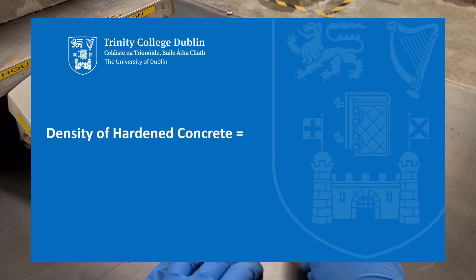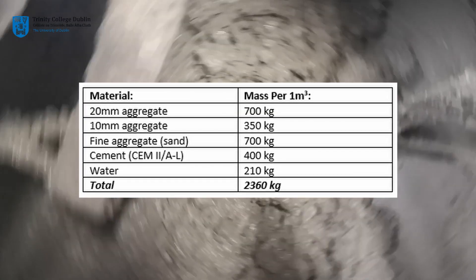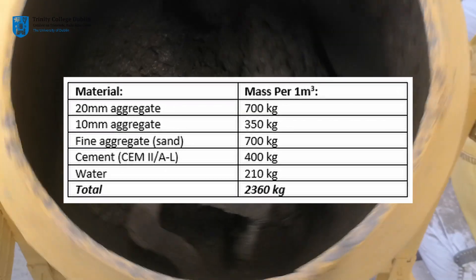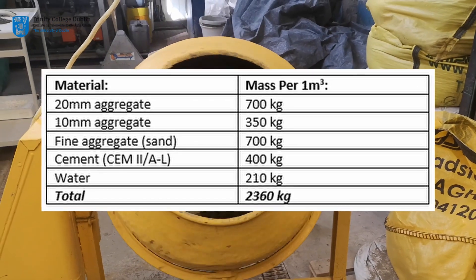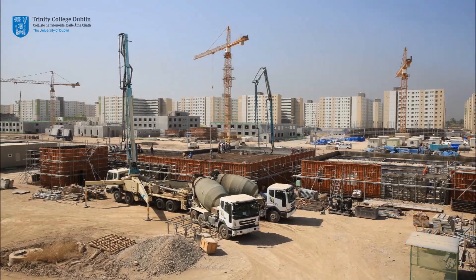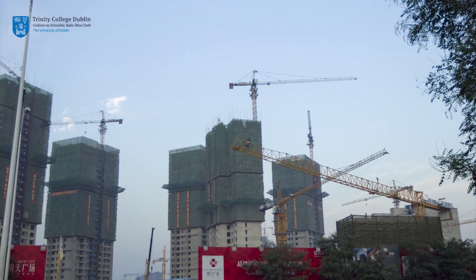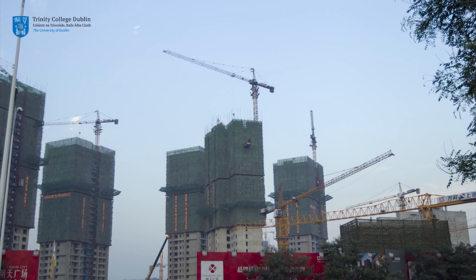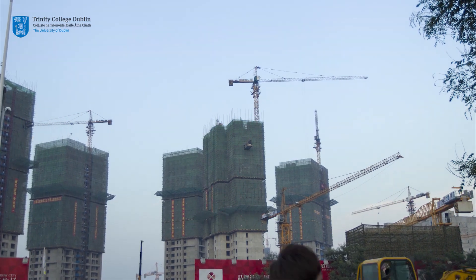Dividing the measured mass by the calculated volume will then provide the hardened density of the sample. You may recall from the mixing video that the target density for this concrete was 2360 kg per meter cubed. Was this density achieved? If not, then why? Also, is there a more accurate method that could be used to determine density? Please include any suggestions in your report.